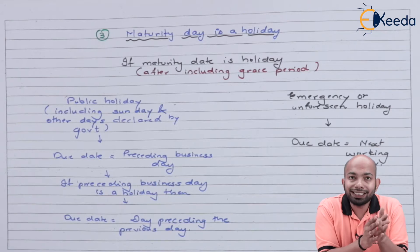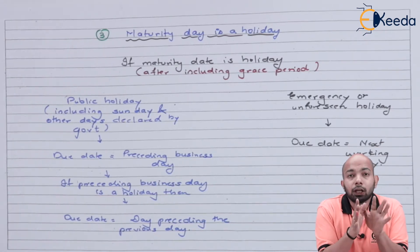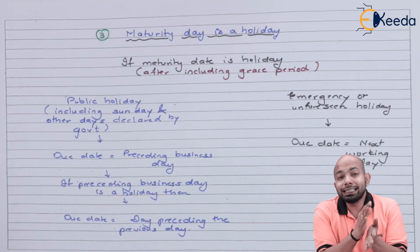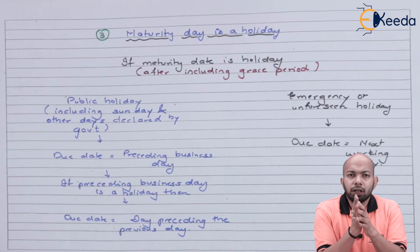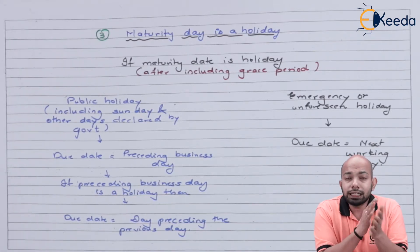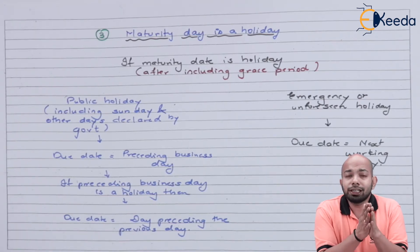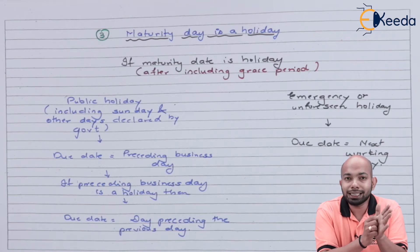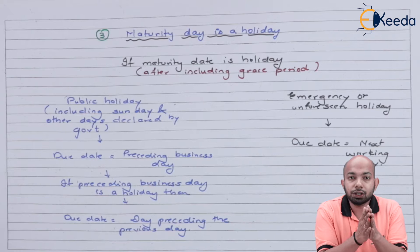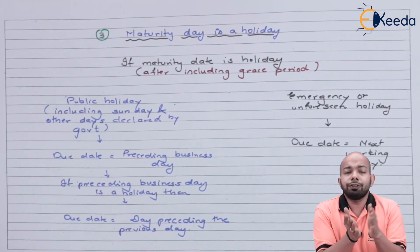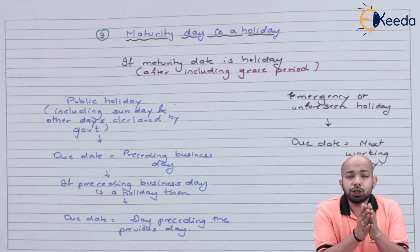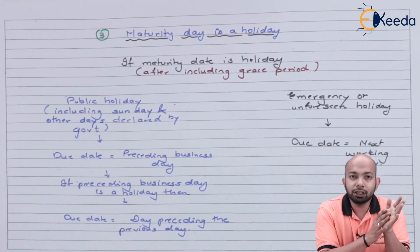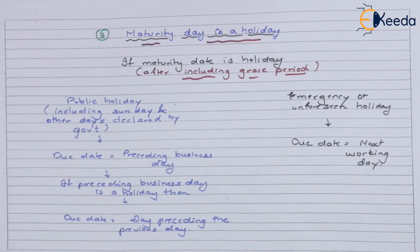For the third situation — the maturity date being a public holiday — there are two kinds of public holidays. First, those already declared by the central government or official gazette. Second, emergency or unforeseen situations like floods, climate events, or terror attacks because of which a city or state comes to a stop. If after adding grace days the maturity date falls on a declared public holiday like Diwali or Christmas, we need to determine the correct due date.